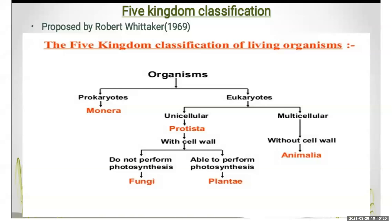Now, what are the hidden secrets of this kingdom? Organisms are of two types: prokaryotic and eukaryotic. Prokaryotic means the cells have no nuclear membrane. Eukaryotic means having a well-defined nuclear membrane. This is the difference between prokaryotic and eukaryotic.